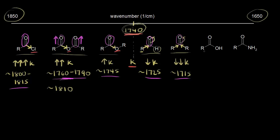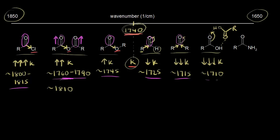For carboxylic acids, if we have a carboxylic acid in the dimeric form — with another carboxylic acid — we get strong hydrogen bonding. That strong hydrogen bonding weakens the carbonyl; some electron density moves into the carbonyl because of the hydrogen bonding. This decreases the value for the force constant even more compared to the average, and so for the carboxylic acid in the dimeric form we expect to see the signal somewhere around 1710, although this value can vary for a carboxylic acid depending on the form it's in.